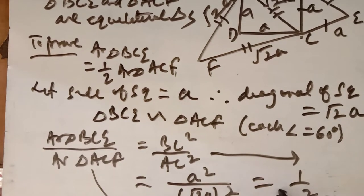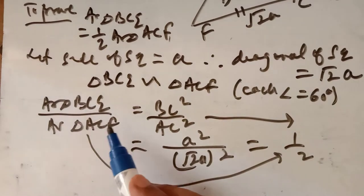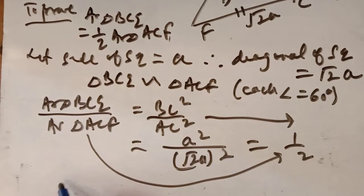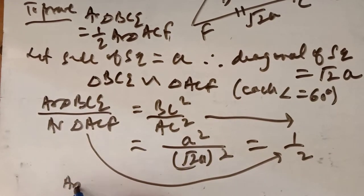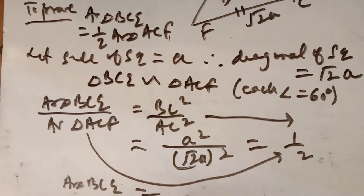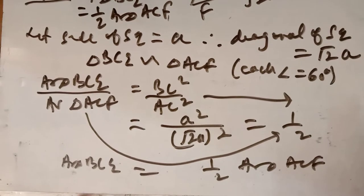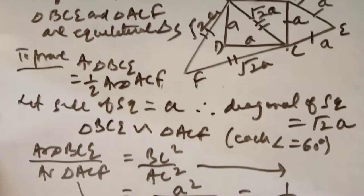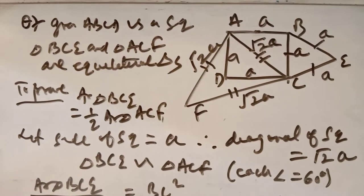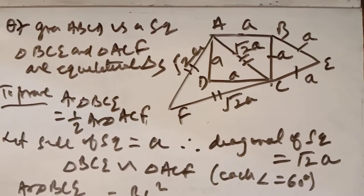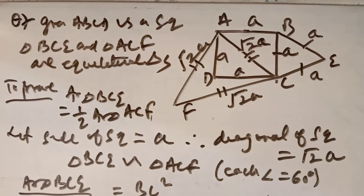So we get area BCE / area ACF = 1 upon 2. Cross-multiplying, area of triangle BCE = half the area of triangle ACF. Therefore the area of the equilateral triangle described on the side of the square is half the area of the equilateral triangle described on the diagonal of the square. This is question number 7.